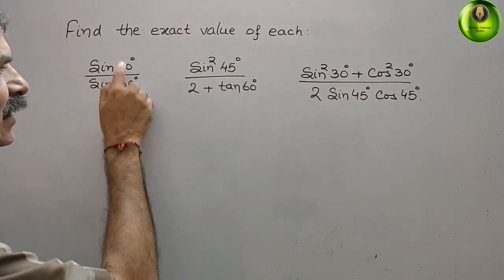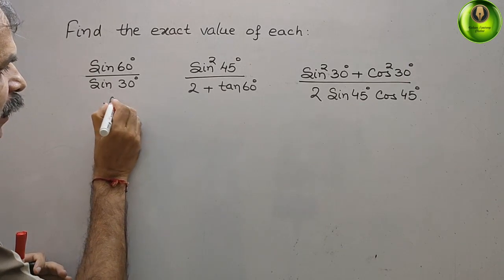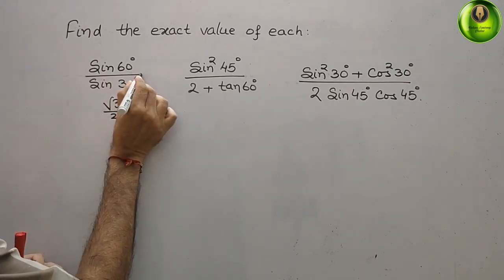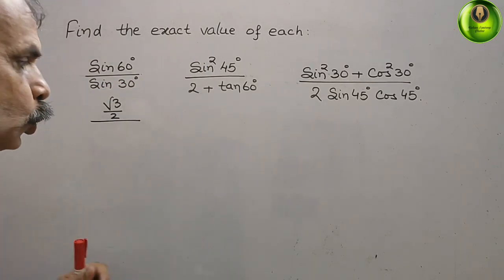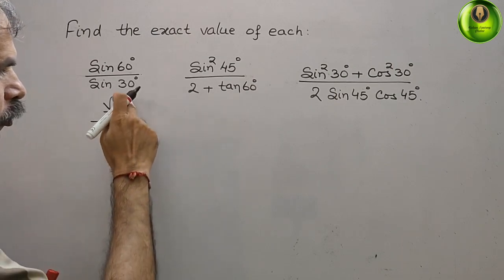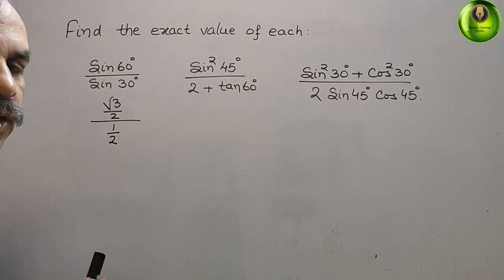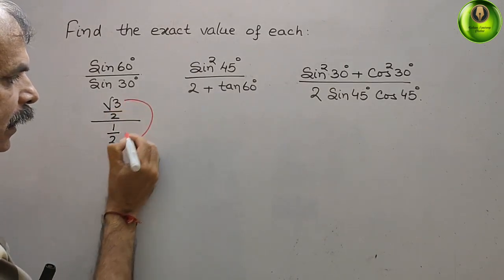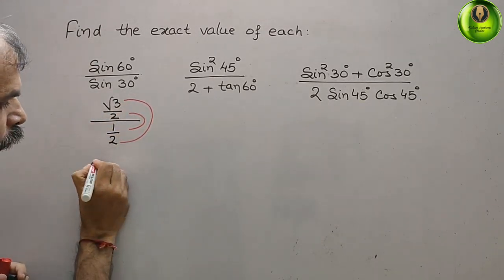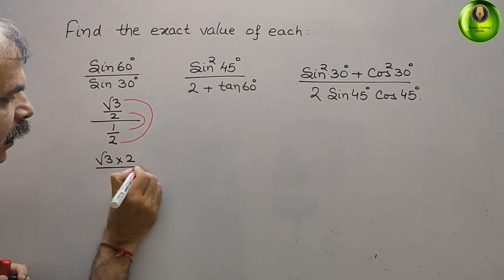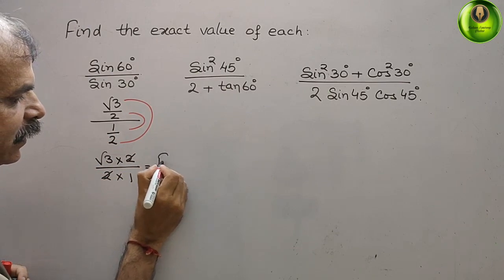Now see this. Sin 60 degree — what is the value of sin 60 degree? That is root 3 by 2. So here we will write root 3 by 2, divided by sin 30 degree, so sin 30 degree is 1 by 2. The denominator and numerator are both in p by q form, so we multiply outer to outer and inner to inner. Root 3 into 2, then root 3 by 2 into 1 — 2 and 2 cancel, so that is equal to root 3.